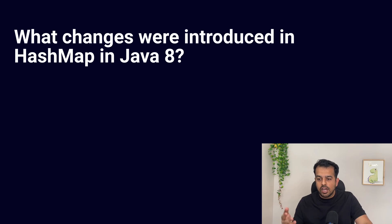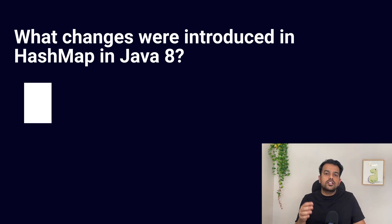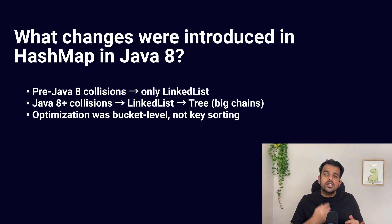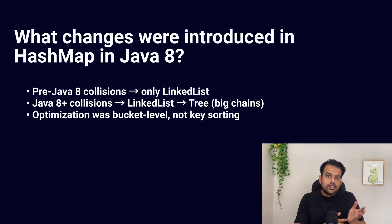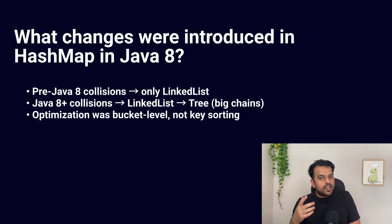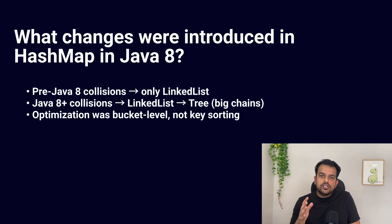The next question: what changes were made to HashMap in Java 8? Before Java 8, HashMap handled collisions only using a linked list. From Java 8 onward, long linked-list buckets convert into a balanced tree after a certain threshold, drastically reducing lookup time. Another change is that iteration order becomes safer and more predictable because the bucket improvement reduces chain comparison cases. Remember: HashMap is still not sorted by default. Java 8 optimized bucket storage — not ordering. Don't say sorting changed; say bucket storage changed from list to tree for large chains.